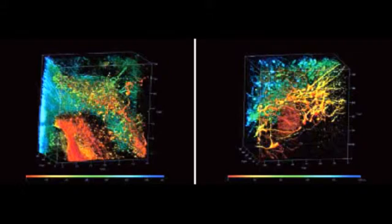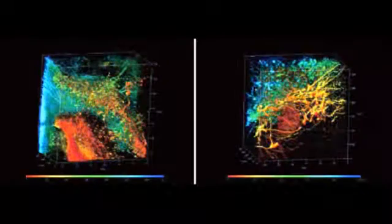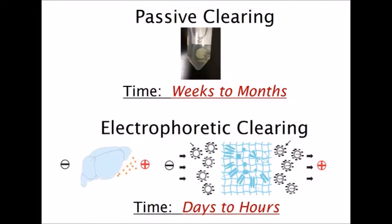There are two ways to clear tissue by the Clarity method, passively or electrophoretically. With passive clarity, tissue samples are placed in a specialized clearing buffer and the sample is allowed to clear while sitting at temperatures ranging from ambient to 37 degrees. Depending on the type and size of the tissue sample to be cleared, passive clarity may take weeks to months.